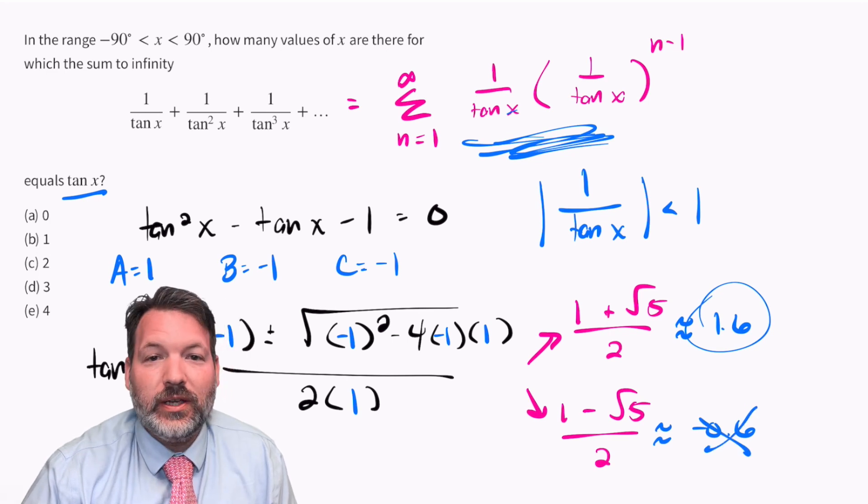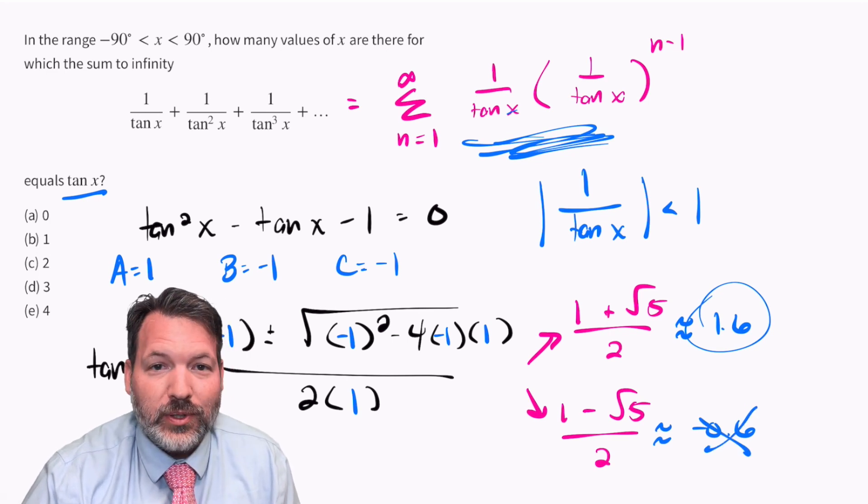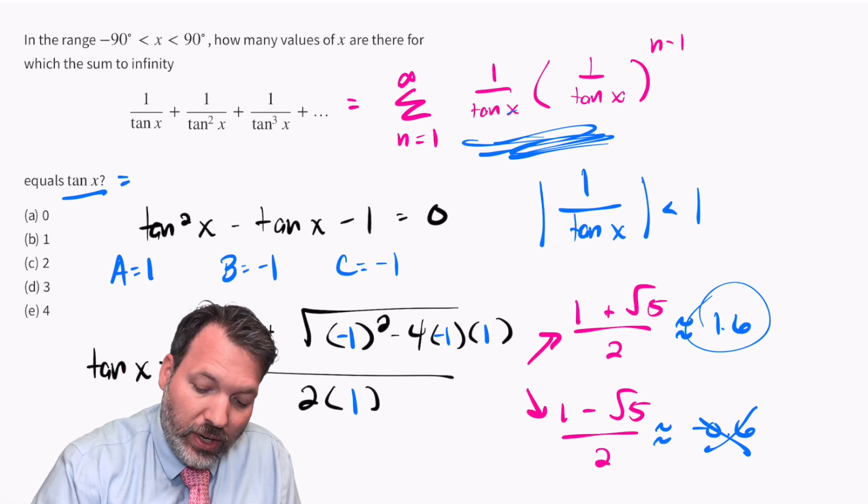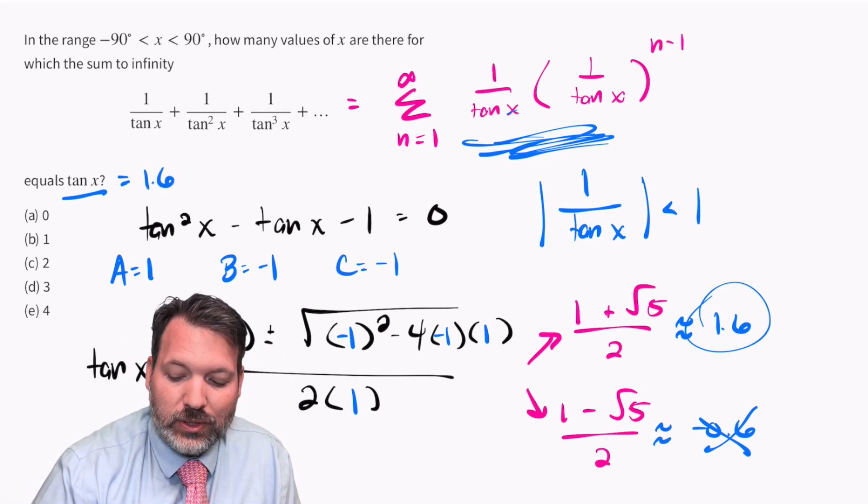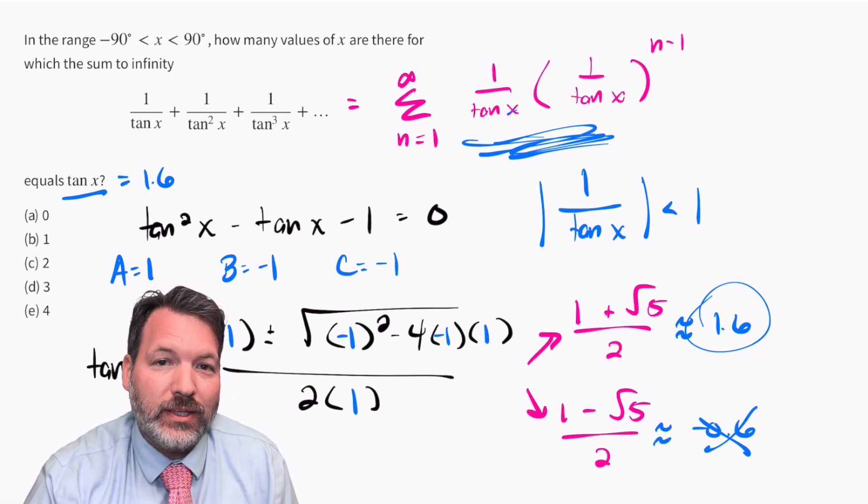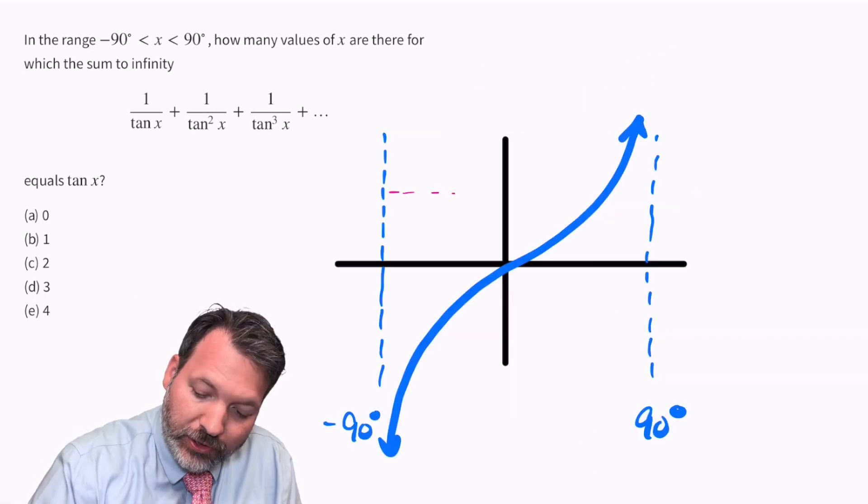So for this statement to be true, we need tangent x to be equal to 1 plus root 5 over 2, or roughly 1.6. Going back to our picture here, we can plot that in.